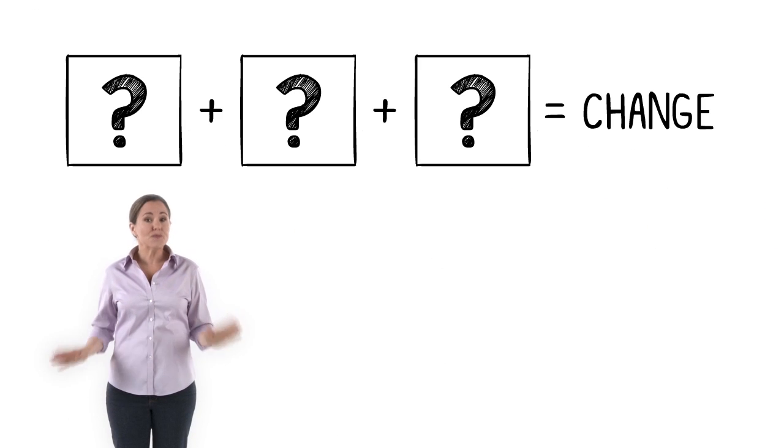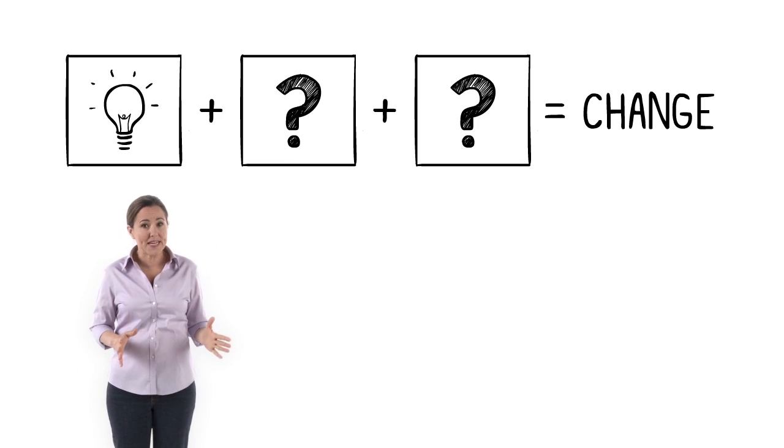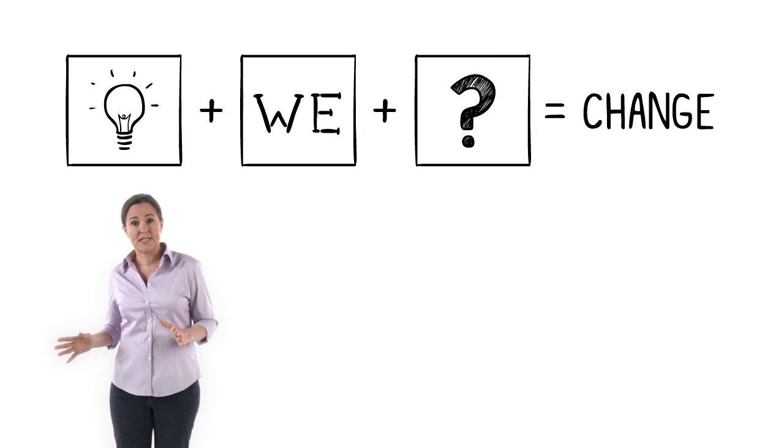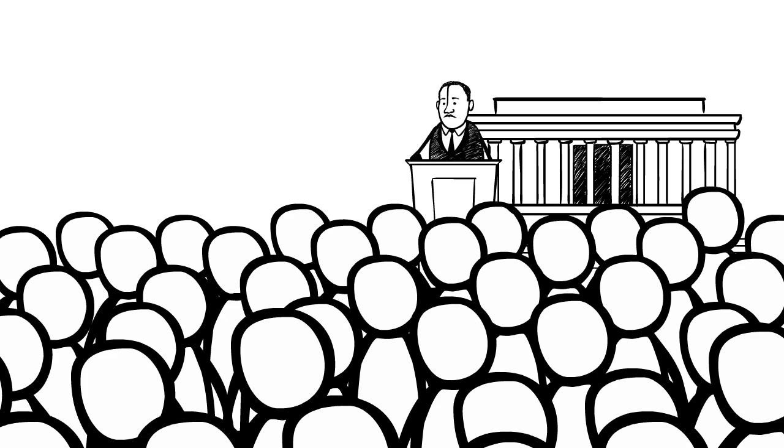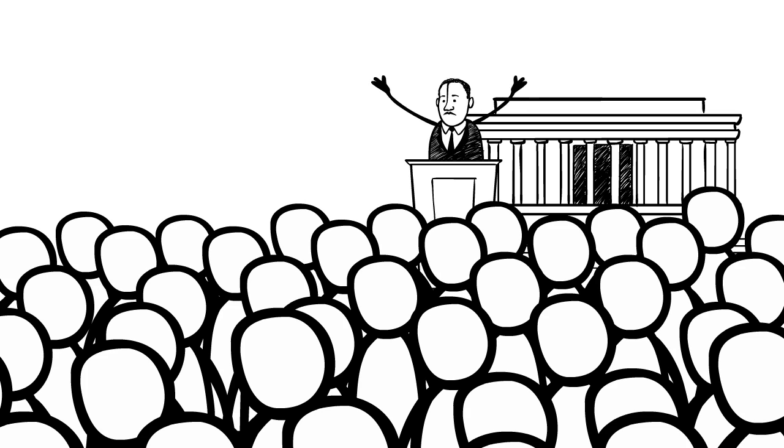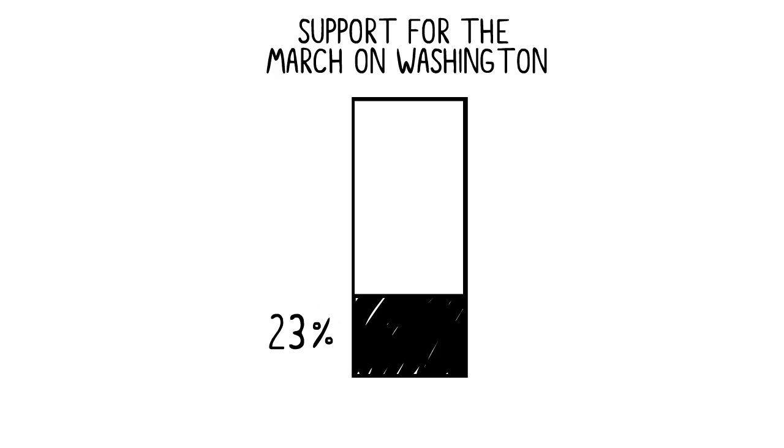Finally, these movements succeeded in creating change because they took their big idea and their commitment to work together, and then they took action. Did you know that when Martin Luther King Jr. organized his March on Washington, less than a quarter of Americans supported him? But that was enough to make change because those supporters took action.